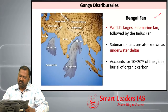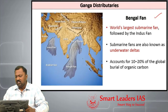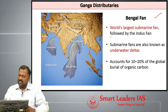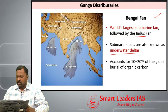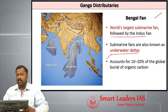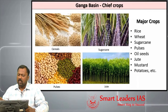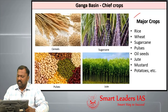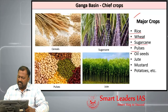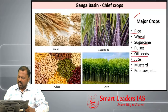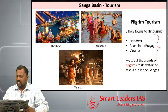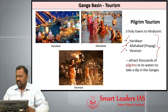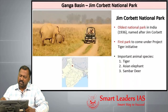The Bengal submarine fan is the world's largest submarine fan, followed by the Indus fan. Submarine fans are known as underwater deltas, caused by deposition, and account for 10 to 20 percent of global burial of organic content. The major crops cultivated along the Ganga basin are rice, wheat, sugarcane, pulses, oilseeds, jute, mustard, and potato. The three important pilgrimage centers on Ganga are Haridwar, Allahabad, and Varanasi, attracting thousands of pilgrims every year.